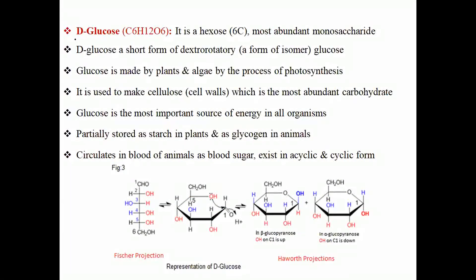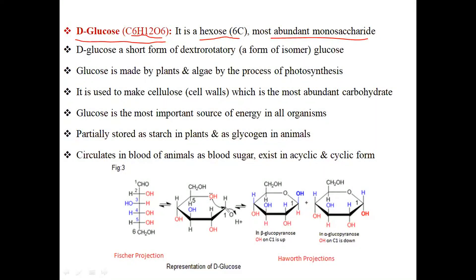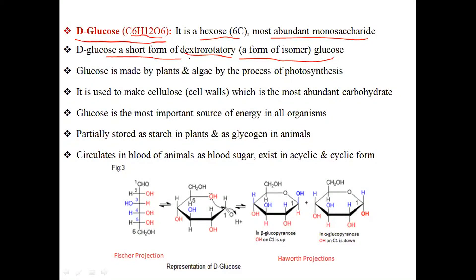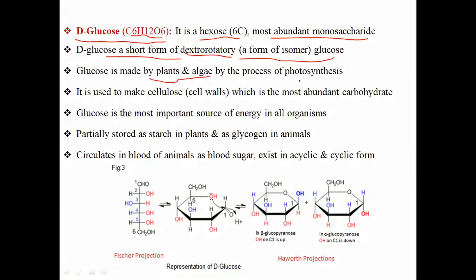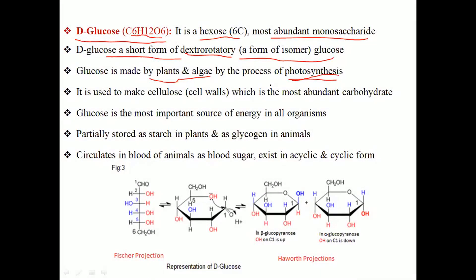Next is D-glucose, a very important monosaccharide with the formula C6H12O6. It is a hexose sugar — hexose means six carbon atoms — and it is the most abundant monosaccharide. 'D' is short for dextrorotatory, a form of isomers discussed in lecture 3. Glucose is made by plants and algae through the process of photosynthesis, in which plants use carbon dioxide and water in the presence of light to produce the sugar glucose.